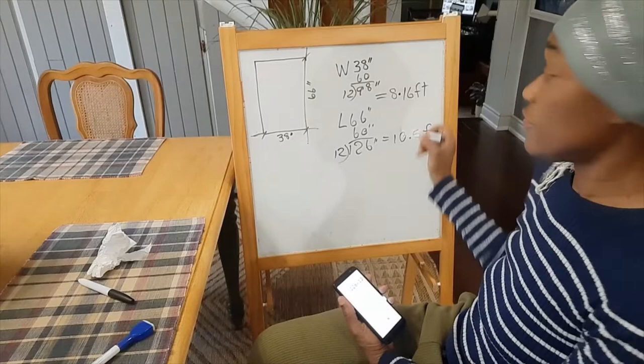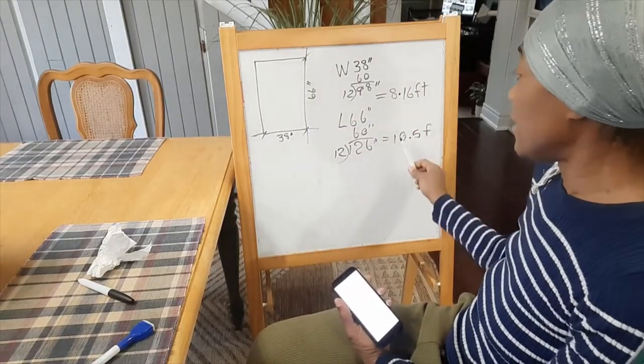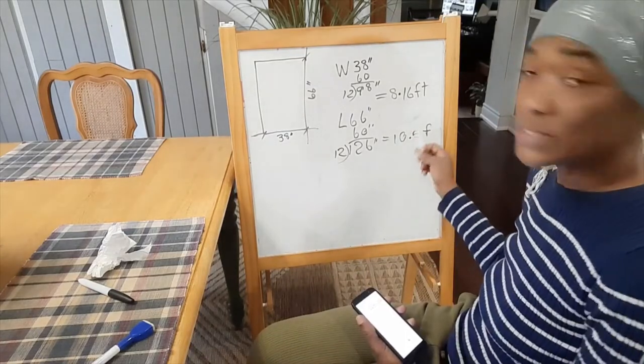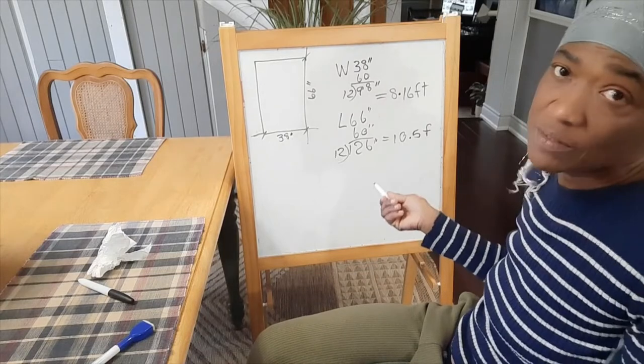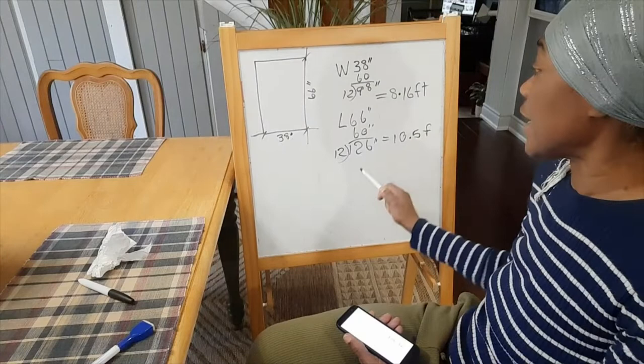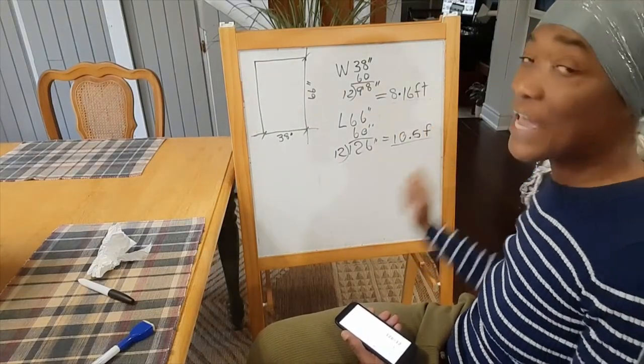So the width of our rug will need to be at least 8 feet. And the length will need to be at least 10 feet. You can go 10.5. You can even go 11. But the smallest I would go is 8 feet by 10 feet.